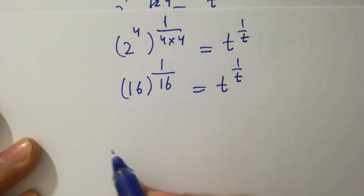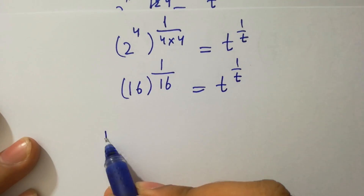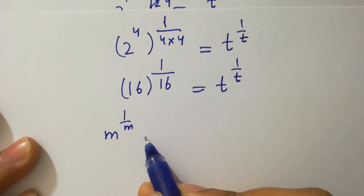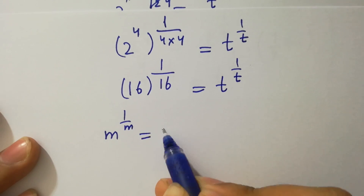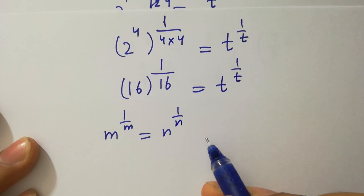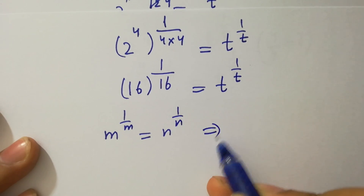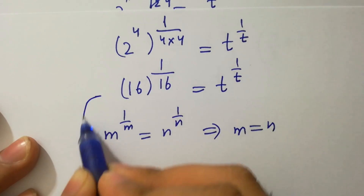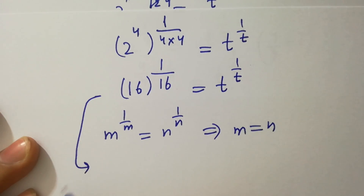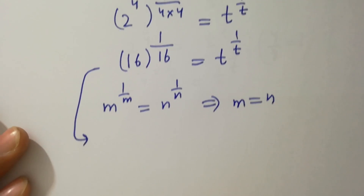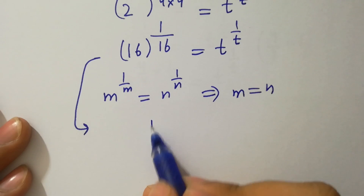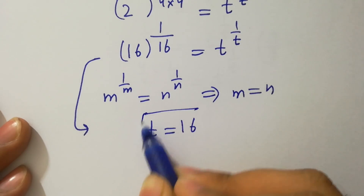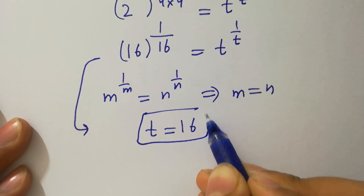Since m to the power 1 over m equals n to the power 1 over t, then m equals n. So here t will be equal to 16, which is the value of t.